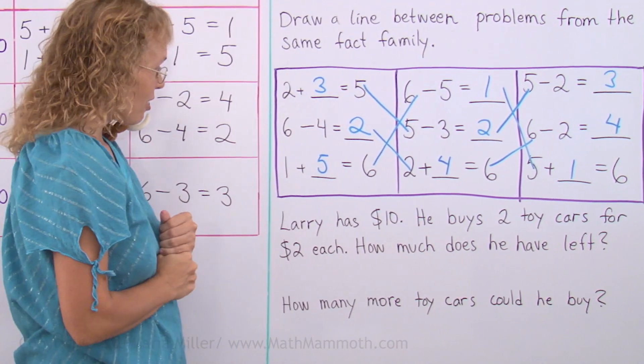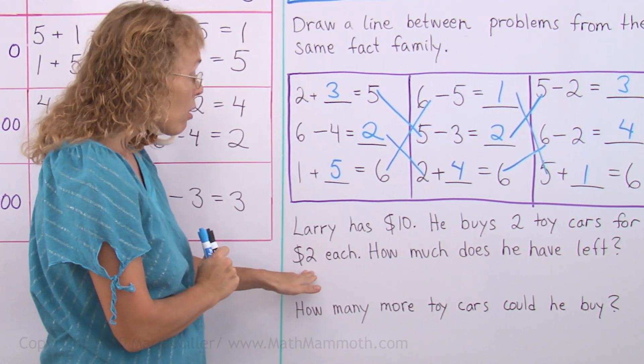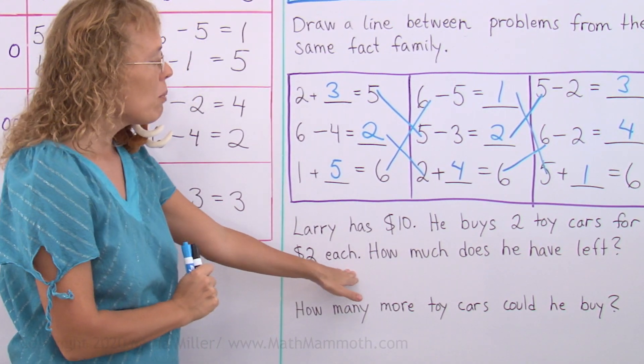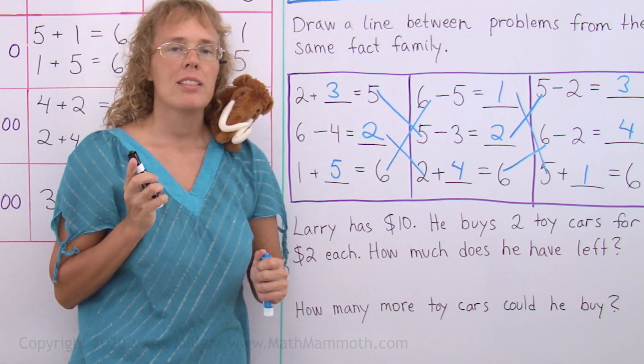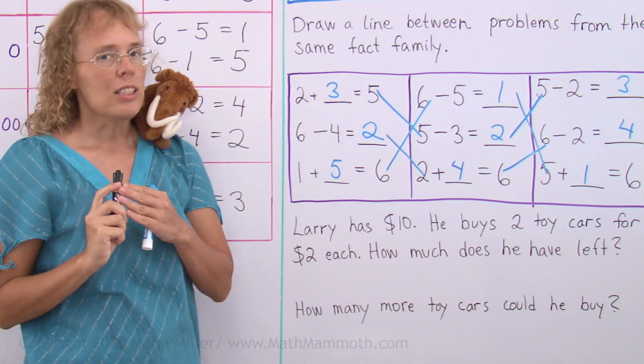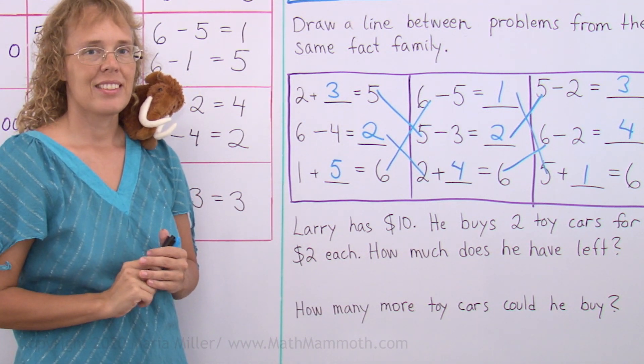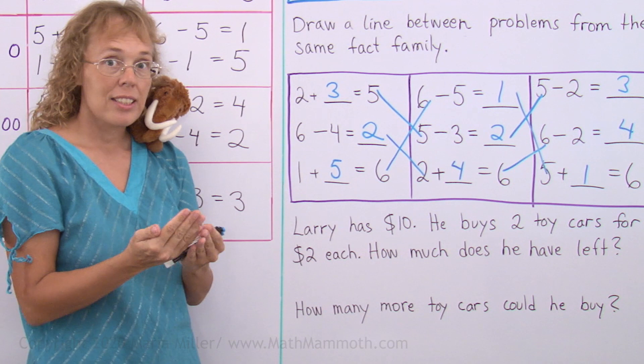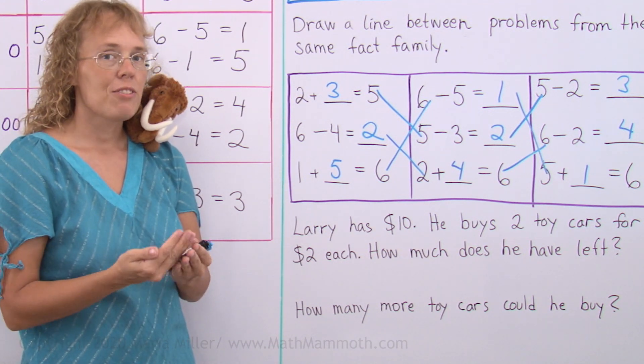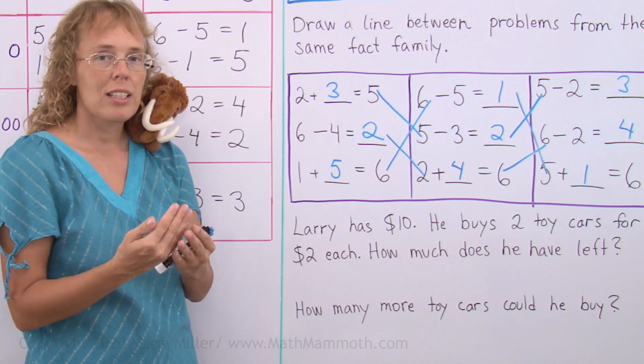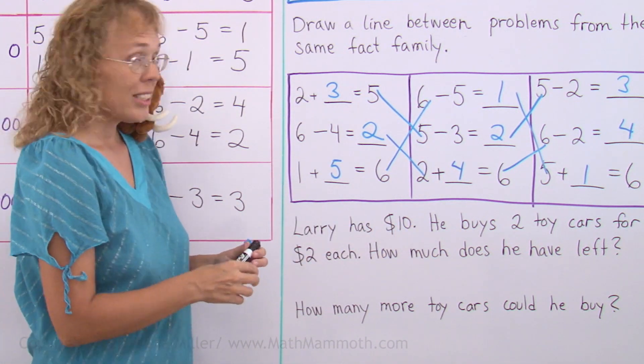Larry has $10. He buys two toy cars for $2 each. How much money does he have left now? Think for a moment. Do you need to add or subtract in this problem? Larry has $10. Larry buys something. So he, of course, uses up some of his money. He gives the money to the store. So we subtract.